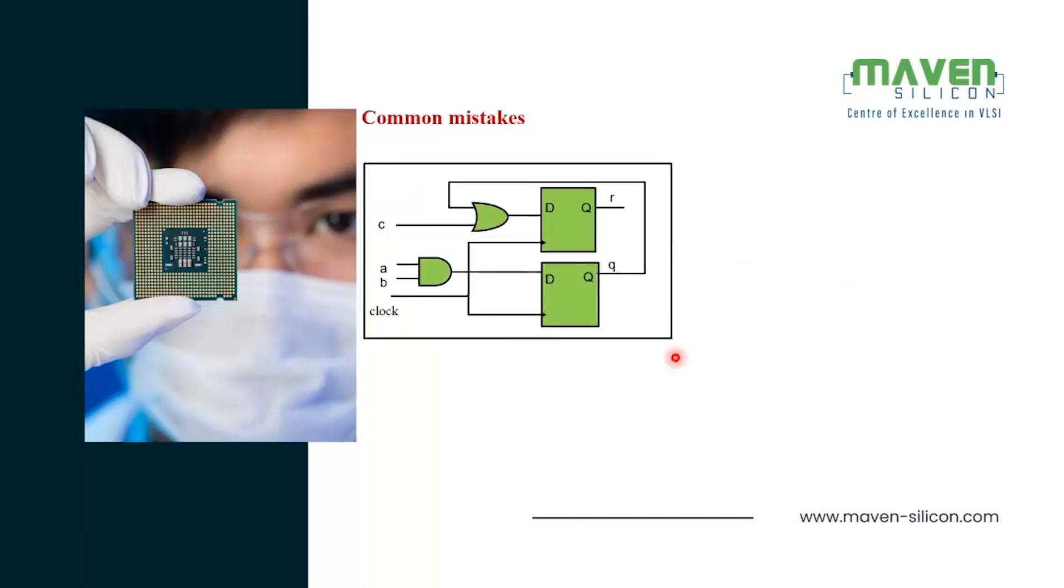In the logical schematic, we might connect the previous value of Q and OR it with C in order to get the register output R as shown over here. The schematic will be appropriate if we have used non-blocking assignments instead of blocking assignment as shown over here.